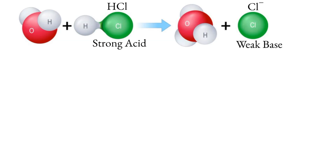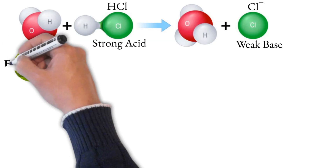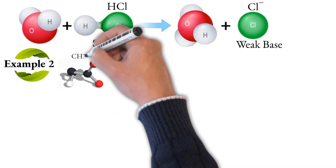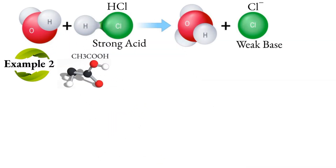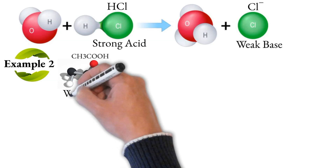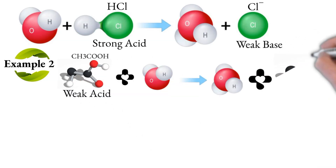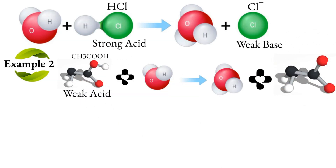So chloride is a weak base. Another example is acetic acid. When we use acetic acid, it is a weak acid, so its conjugate base is acetate ion.